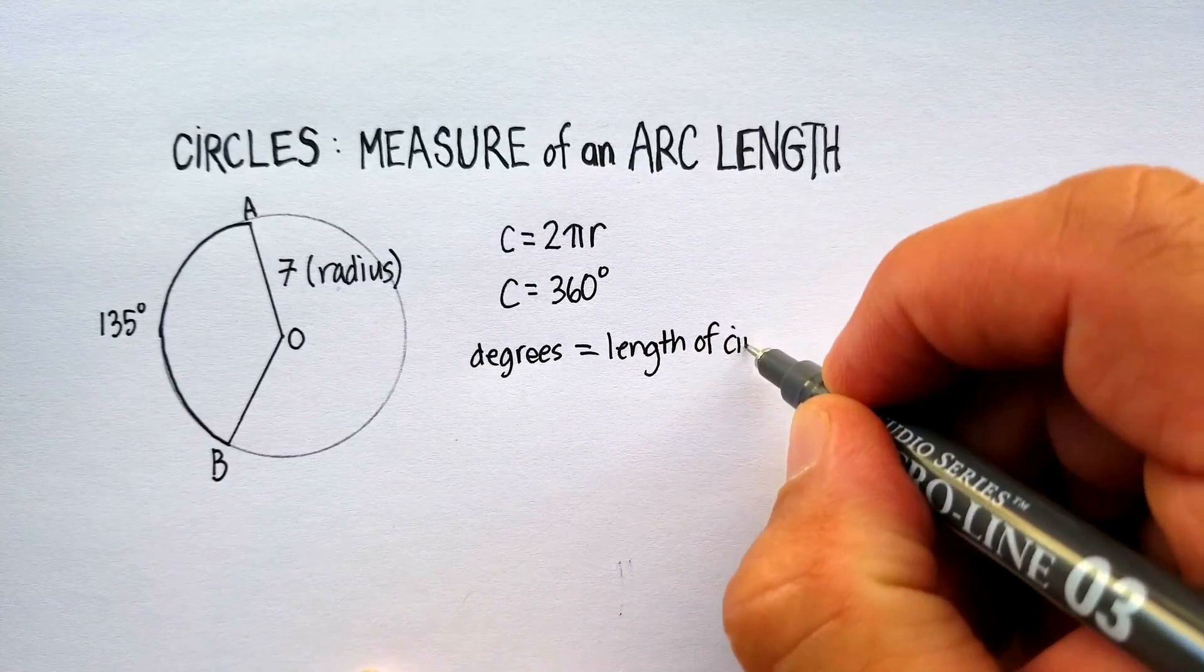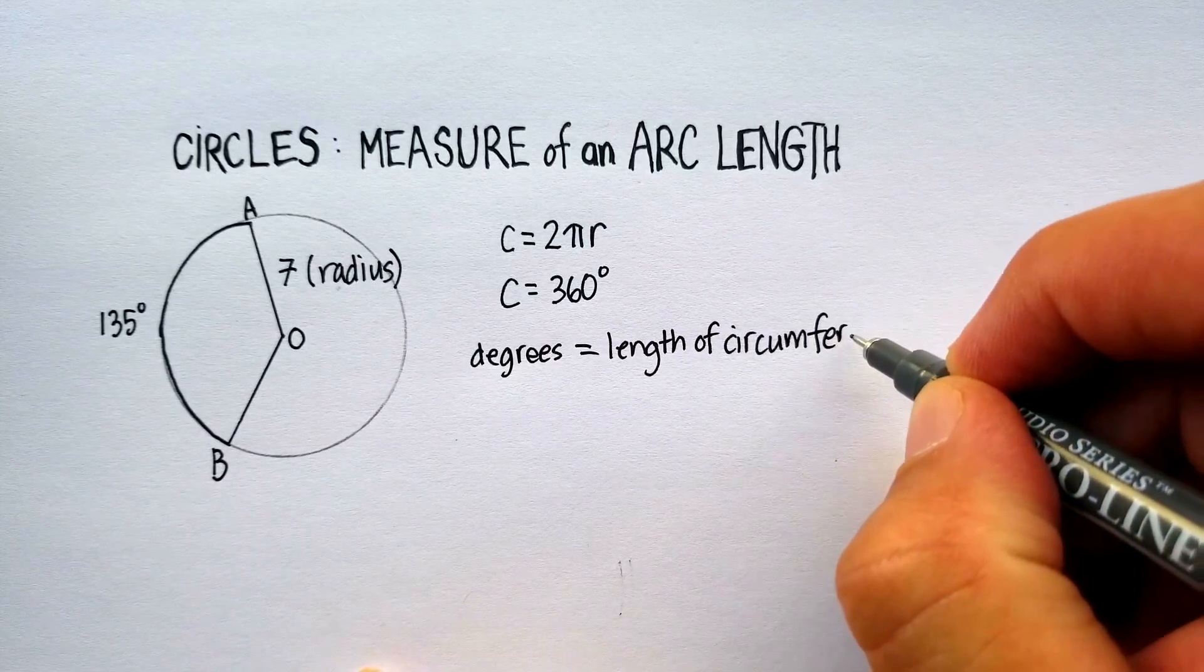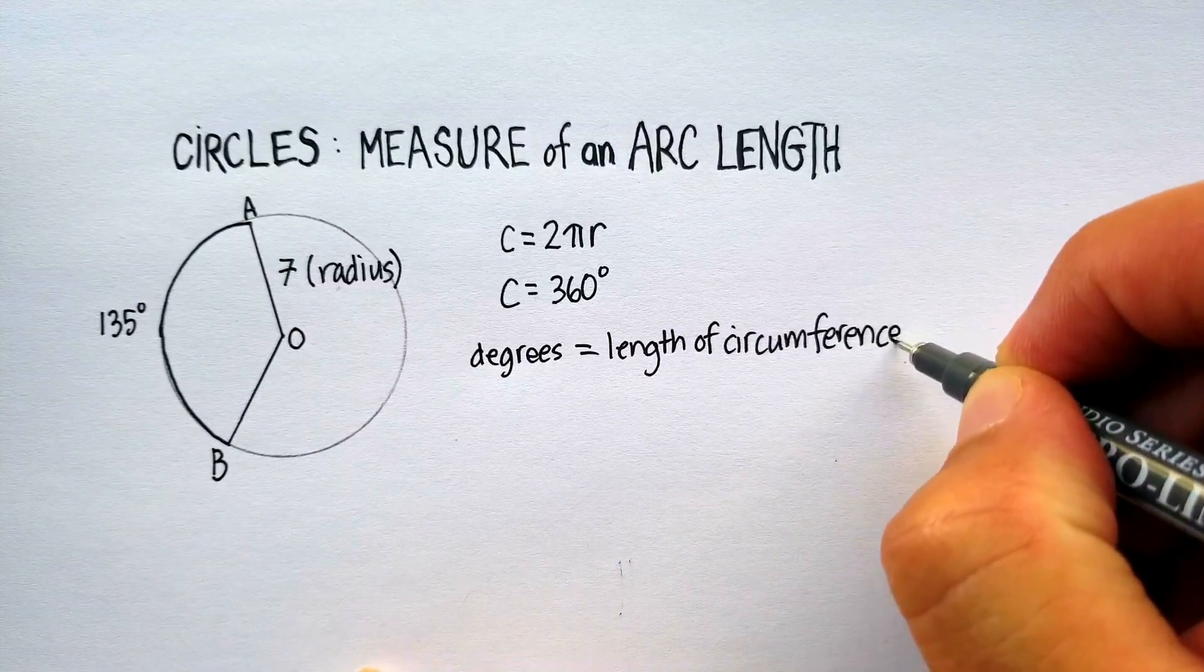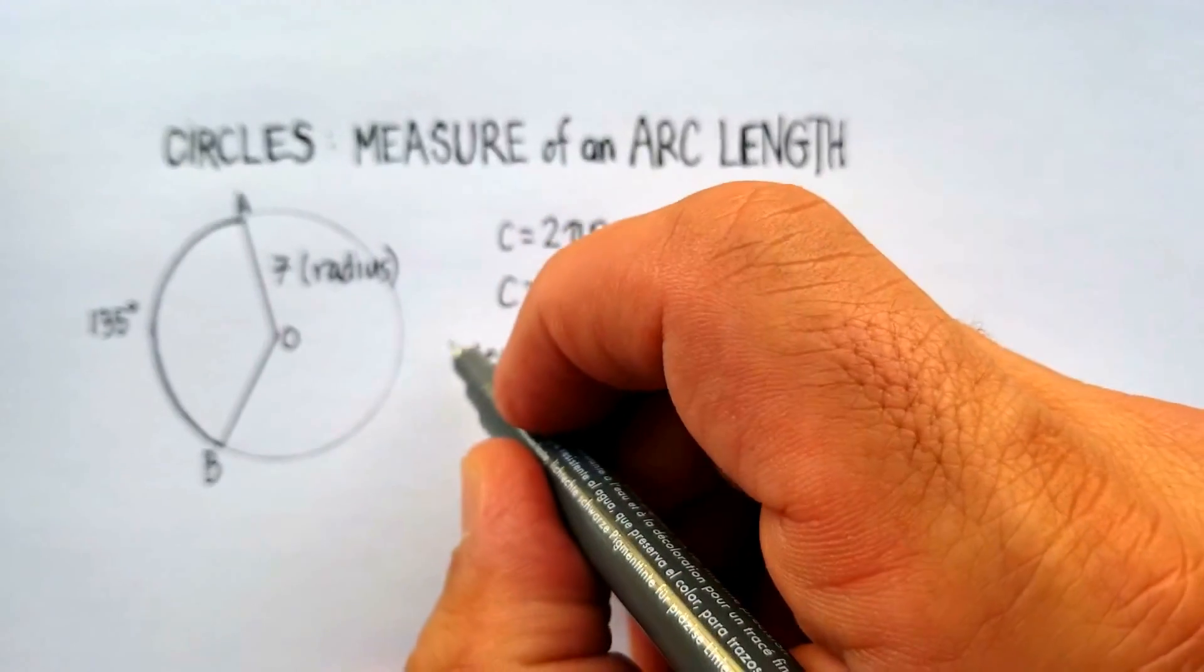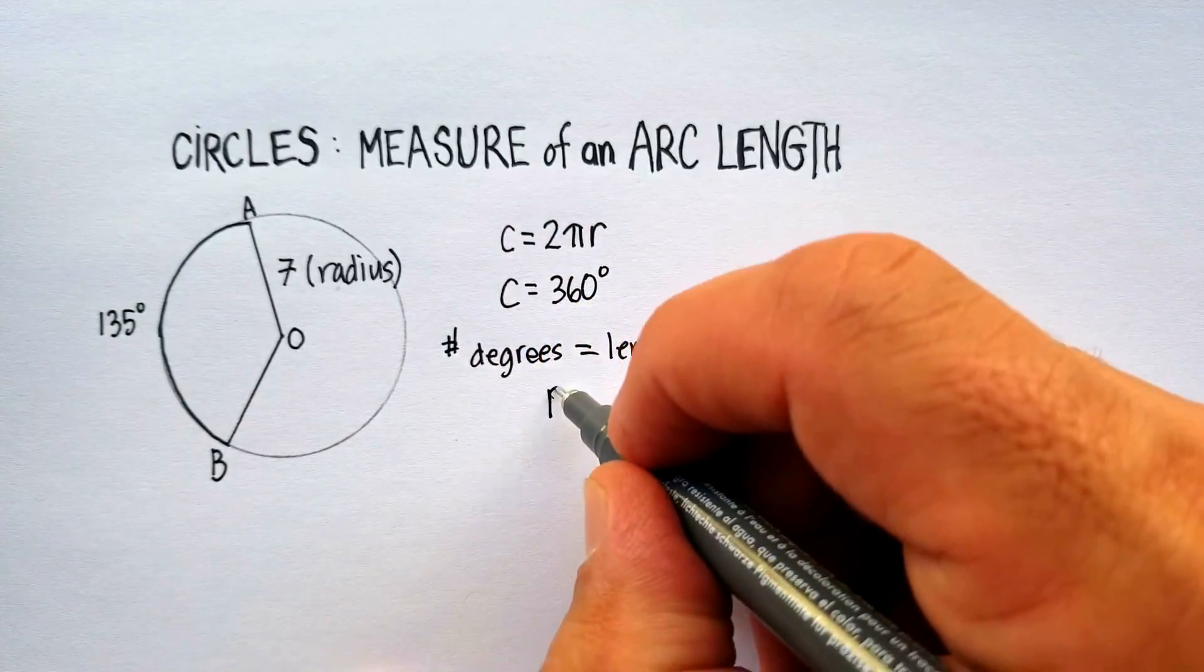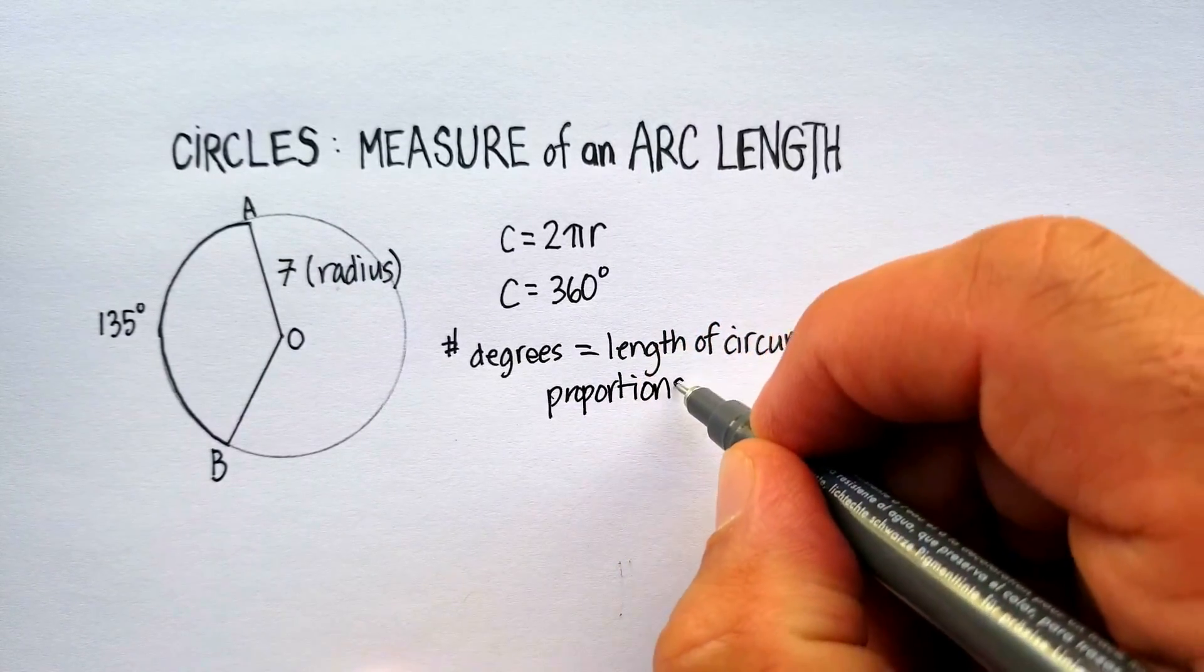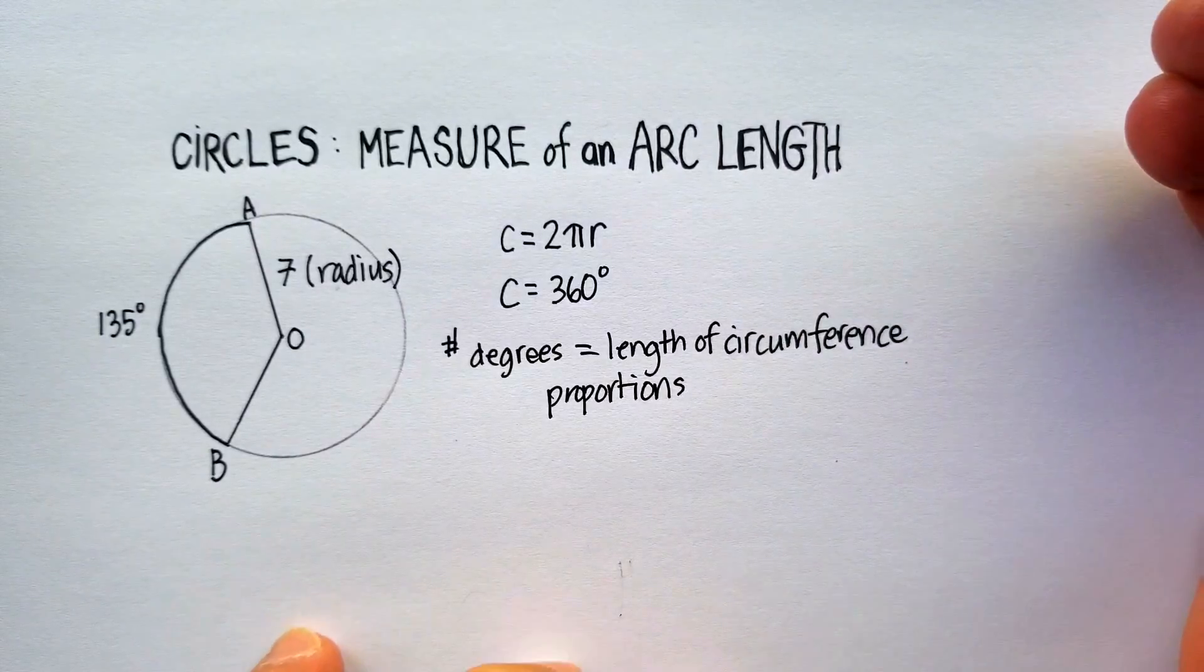All right, let me just write all this down here real quickly. Circumference of a circle. And what we'll do, let me just call this the number of degrees proportions. And that's going to be our strategy. So let's see what we can come up with.